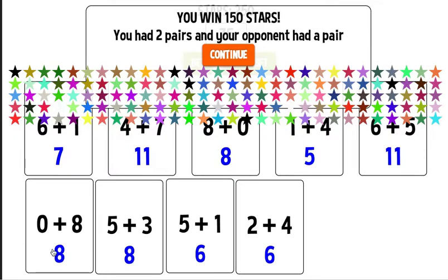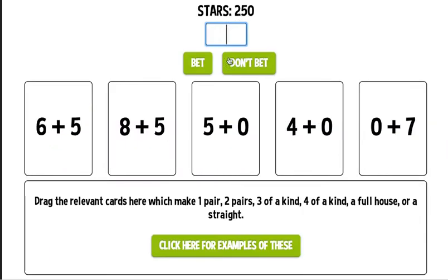You had two pairs and your opponent had a pair. So if you see here once you bet you can see what you have which is 8, 8, 6, 6. My opponent had a pair of 11s but my two pair beat the computer's one. So I click continue. I now have 250 stars and we play again.